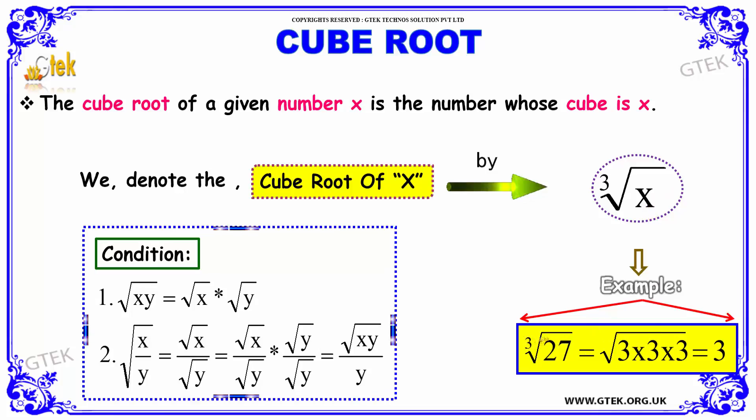Cube root of 27 is 3 because it is nothing but 3 × 3 × 3. That is, 3 times you have to multiply 3 in order to get 27.